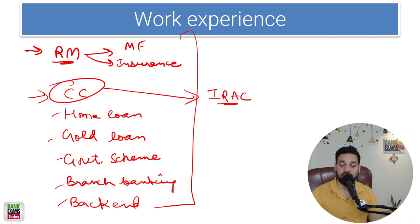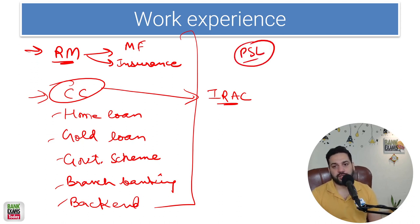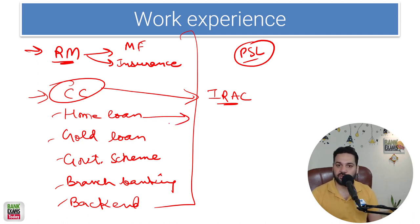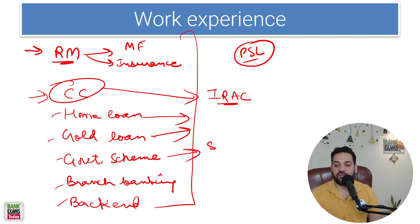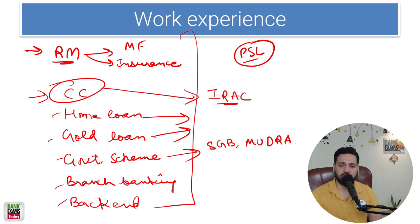If you are into agriculture credit, knowledge of priority sector lending is very important. If you are into home loans, know the RBI guidelines related to home loans. If you are into gold loans, know the RBI guidelines related to gold loans. If you are into government schemes, know whatever schemes you are dealing with — like sovereign gold bonds or mudra — which are popular schemes that bankers deal with.